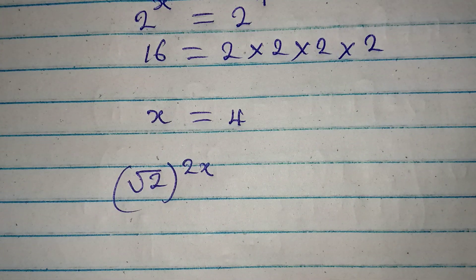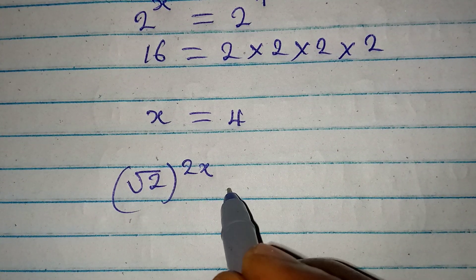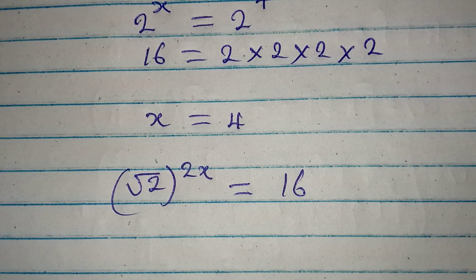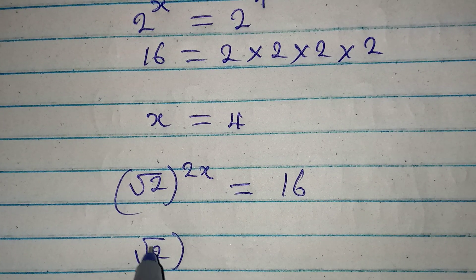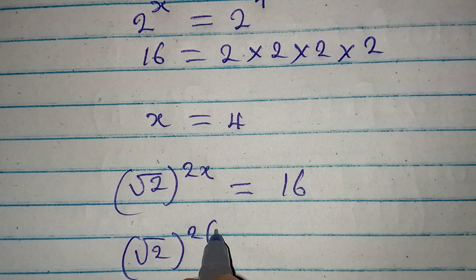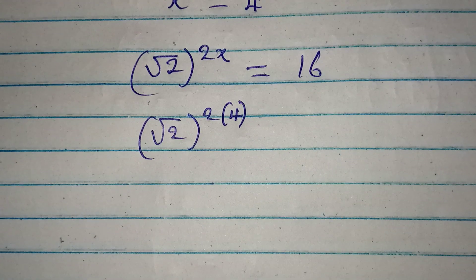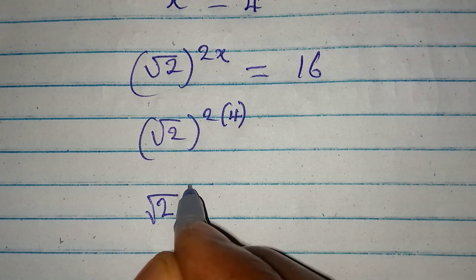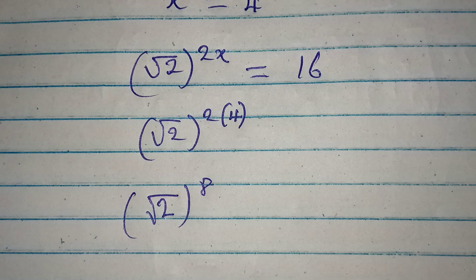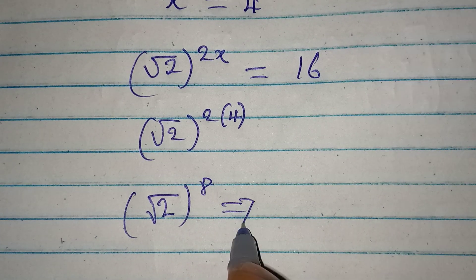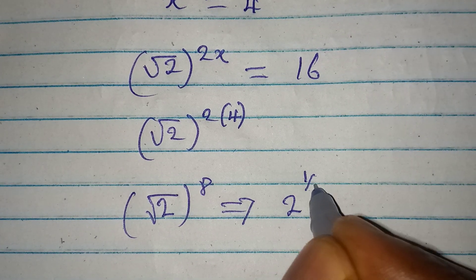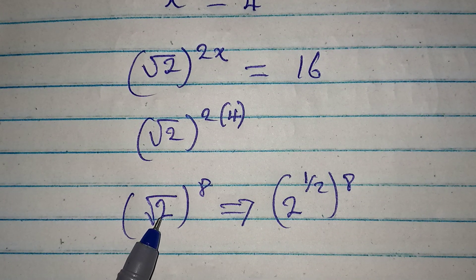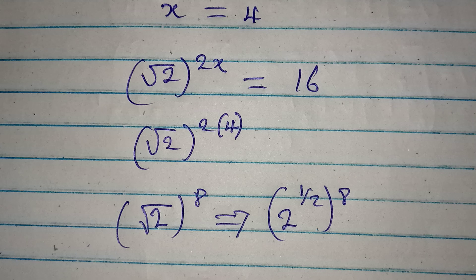Now the original equation is square root of 2 to the power of 2x equal to 16. If x is 4, that means we have square root of 2 to the power of 2 times 4, which gives us square root of 2 to the power of 8. This implies 2 to the power of 1 over 2, to the power of 8, because square root of 2 is 2 to the power of 1 over 2.